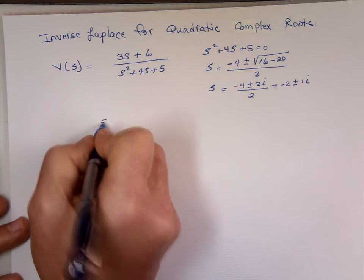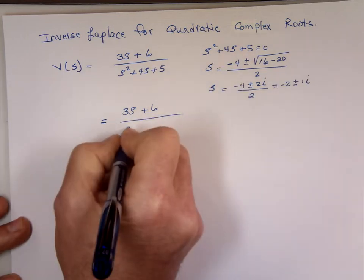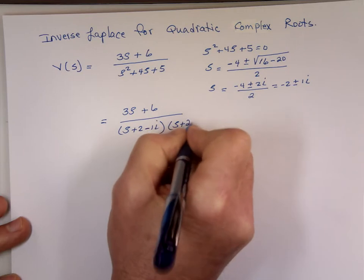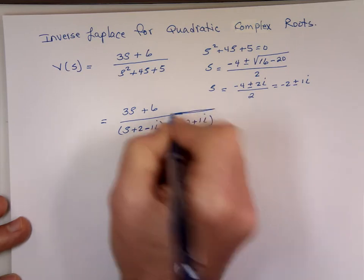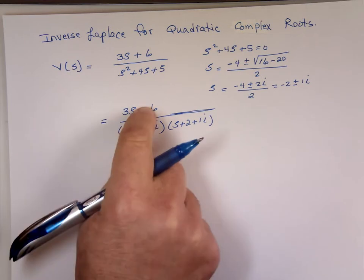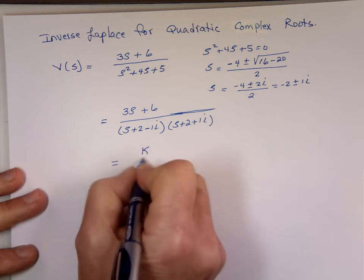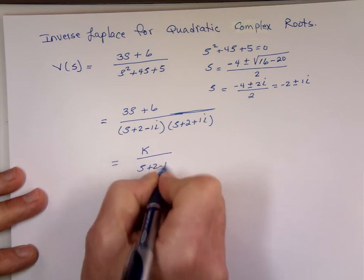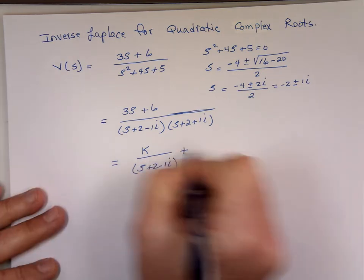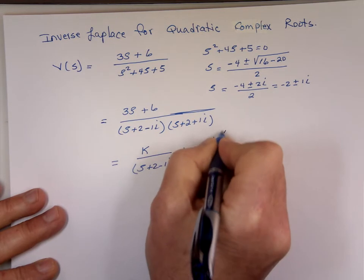So if you take this and factor that, you end up with 3S plus 6 over, when you bring them to this side, they become (S plus 2 minus 1i)(S plus 2 plus 1i). Since this is really linear, the top is always going to be one degree less than the bottom when you do a partial fraction. So if you do a partial fraction on this, you will notice this is K over (S plus 2 minus 1i). Notice I didn't say K1. Normally we say K1 plus K2, but instead of K1 and K2, what we found out is that the second one is always going to be the conjugate of this one — always.